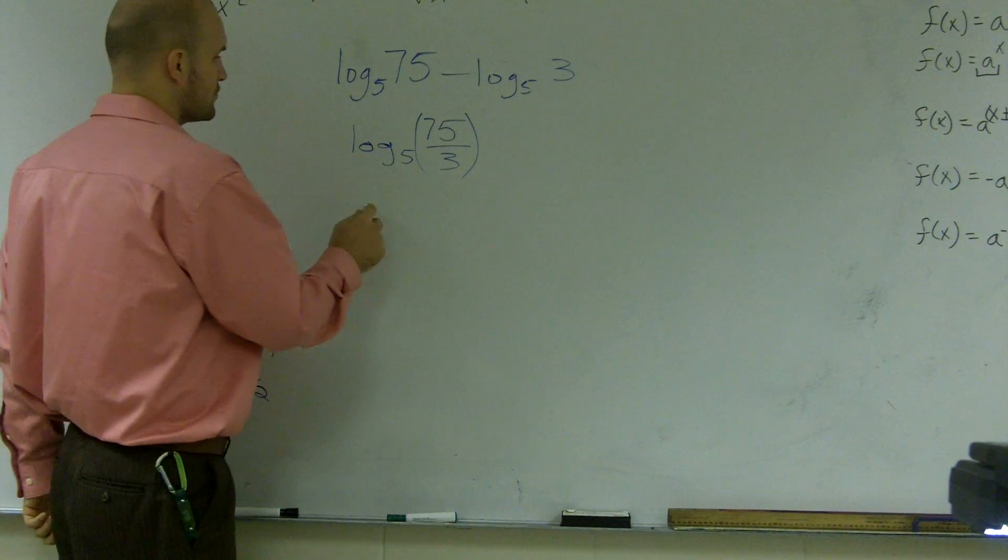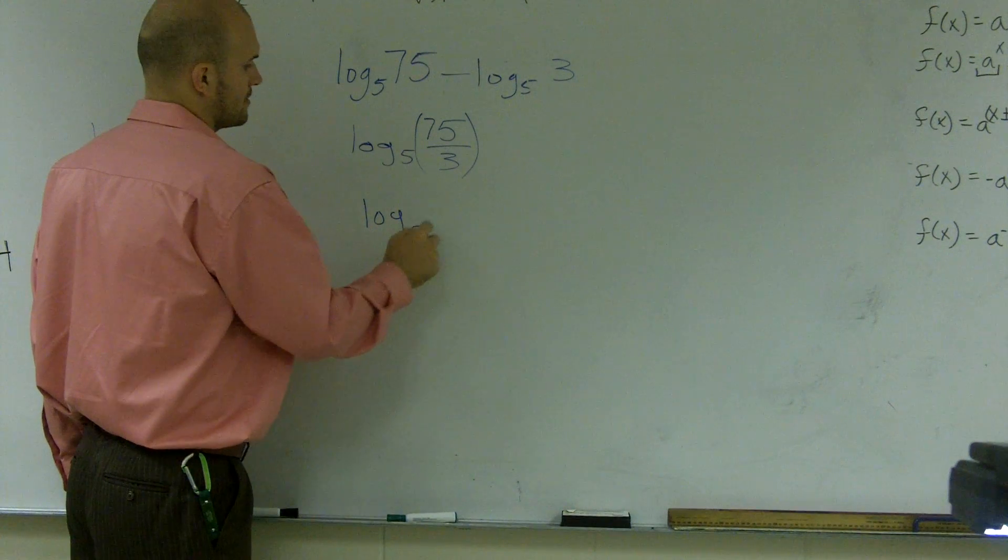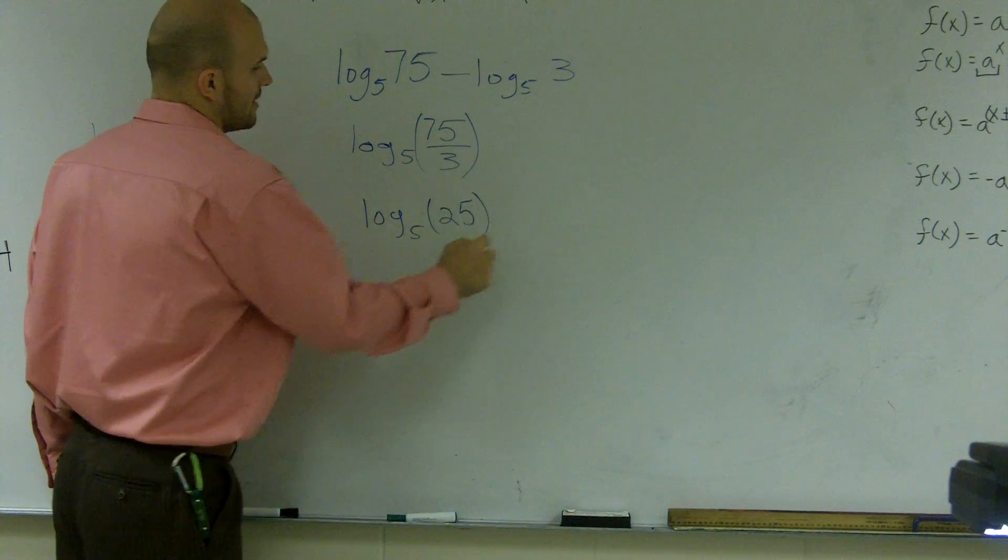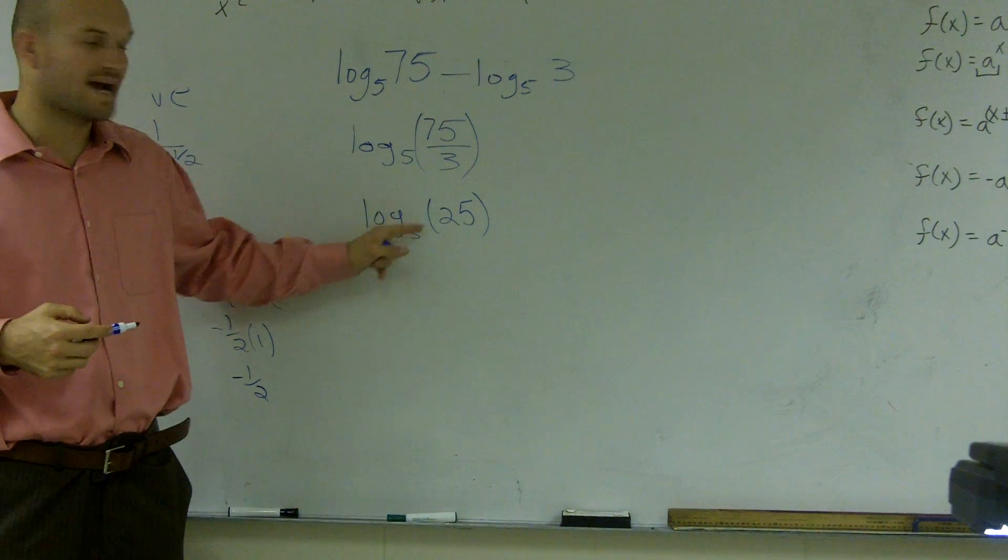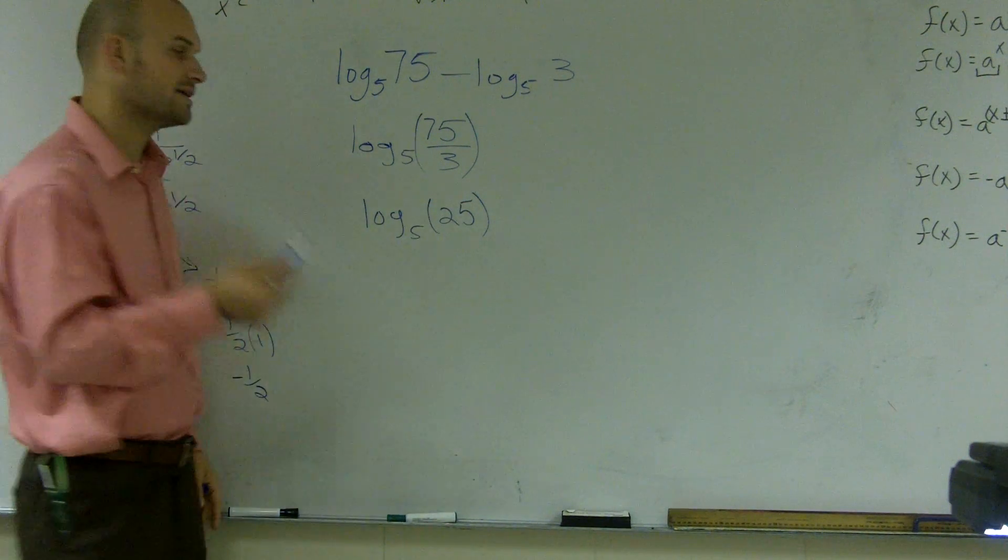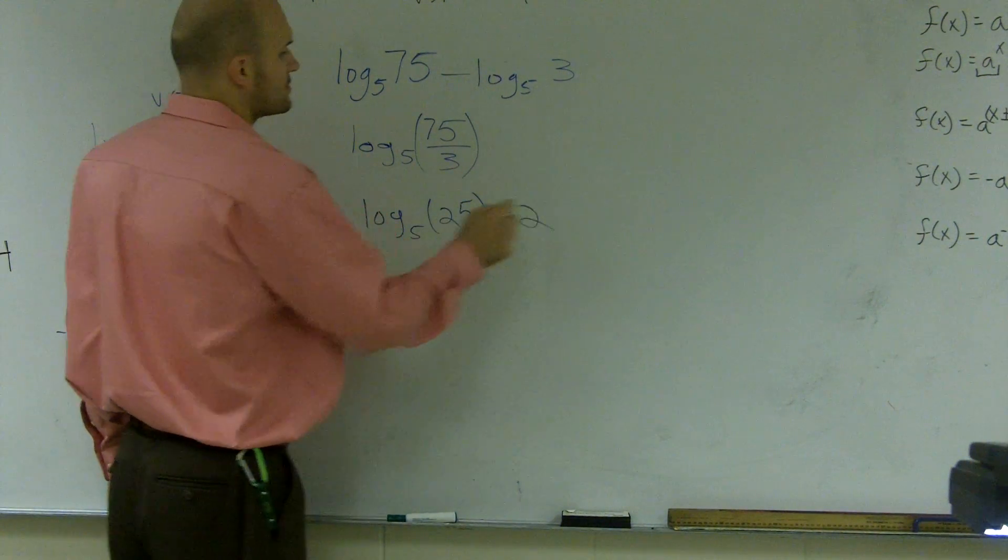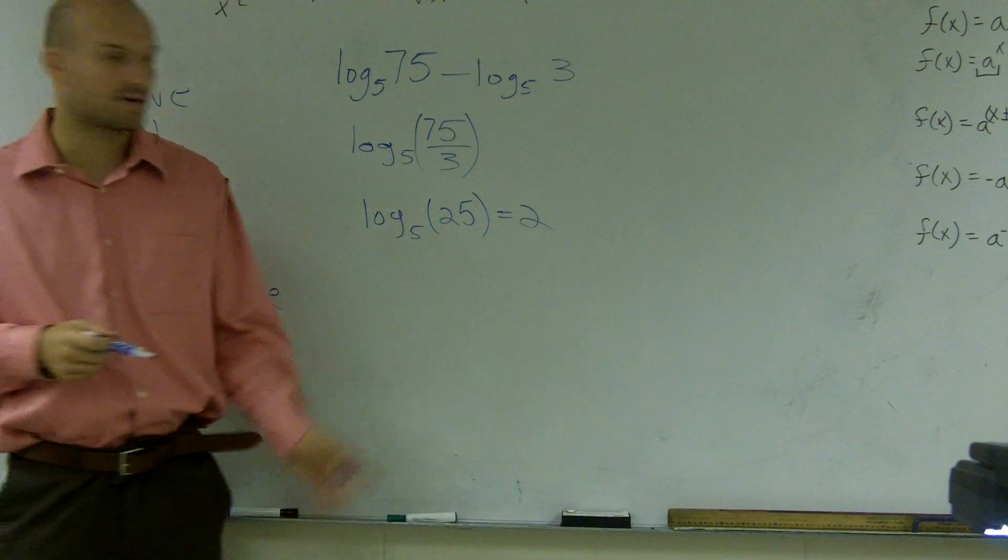Now, 75 divided by 3 gives me 25. And then to evaluate this logarithm, 5 raised to what number gives me 25? And the answer is 2. So that's how you evaluate that logarithm.